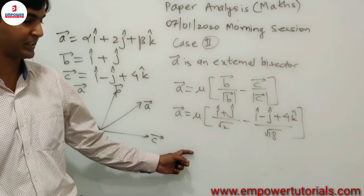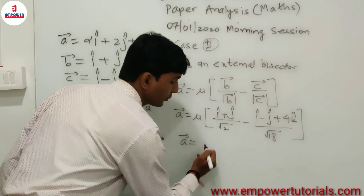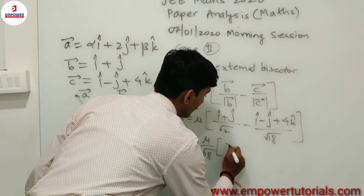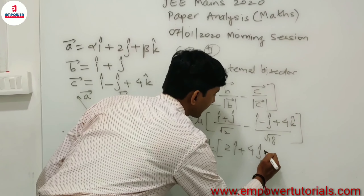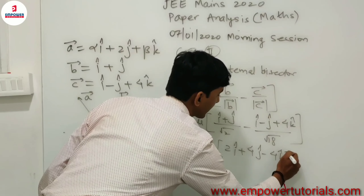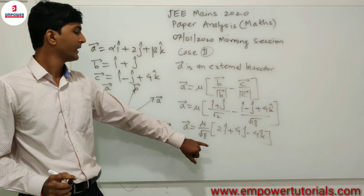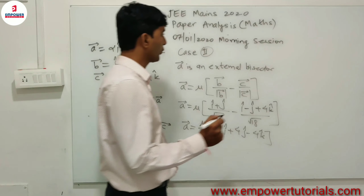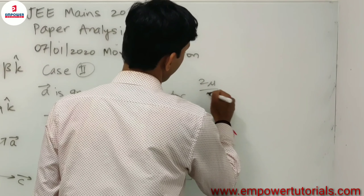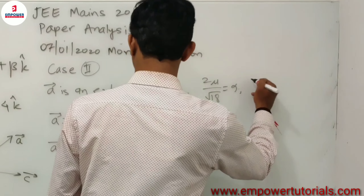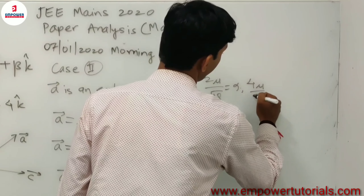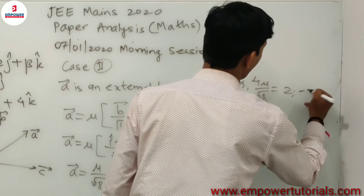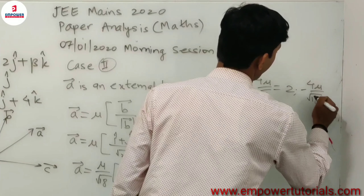Simplifying this expression, we get **a** = (μ/√18)·(2î + 4ĵ − 4k̂). Comparing components with α·î + 2ĵ + β·k̂, we get: 2μ/√18 = α, 4μ/√18 = 2, and −4μ/√18 = β.